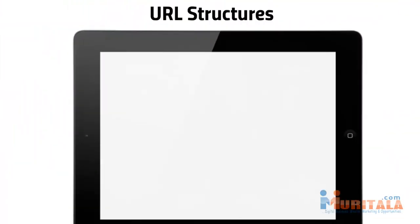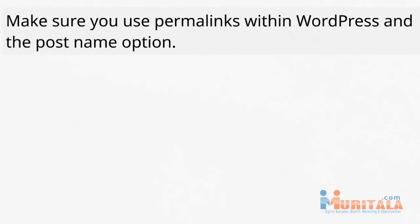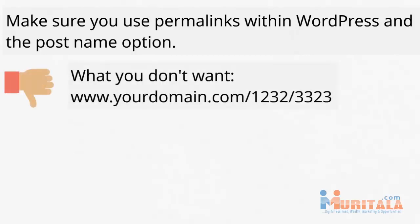Now I want to talk about URL structures. Within WordPress itself, you have something called permalinks, and this gives you the option to basically make your URLs more search engine friendly or even human friendly. What I would do is choose the post name option — I'll show you how to do that in video number five. You don't want your domain to look like 'www.yourdomain.com/123/332' or with question marks and numbers. You definitely don't want your URL to look like that, and it looks like that by default.